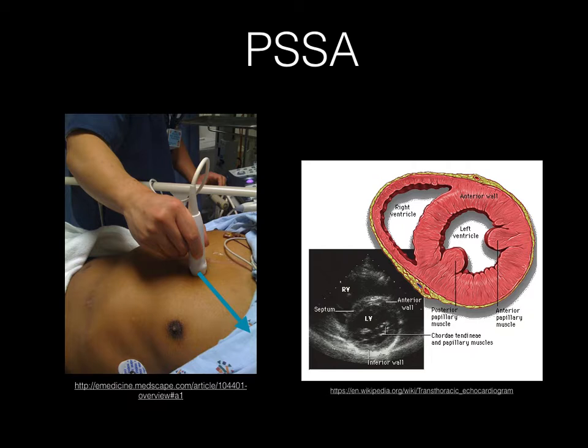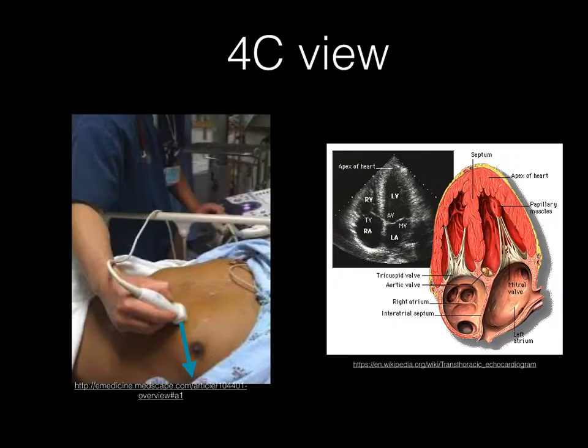For the parasternal short axis view, you will then rotate your probe 90 degrees towards the patient's left shoulder to obtain a good view of the papillary muscles as well as the left ventricle, which looks circular.